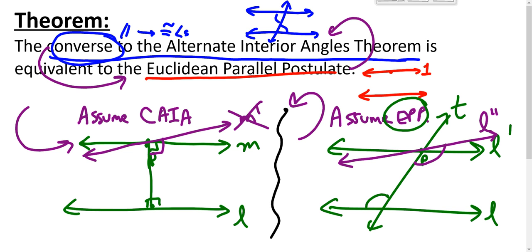So in each direction, we assume a conditional and prove a conditional. Incidentally, there are many other things that are also equivalent to Euclid's parallel postulate — those come up in another screencast.